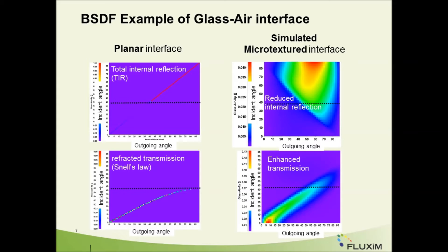Moreover, we can observe the disappearance of the total internal reflectance angle, as we still observe some transmittance at angles above 42 degrees for light coming from glass to air with a rough interface.